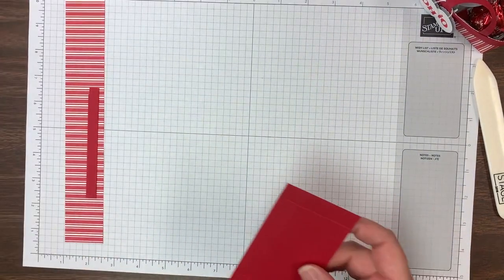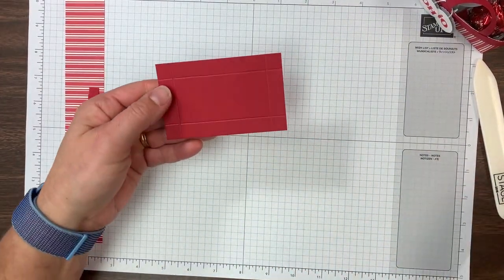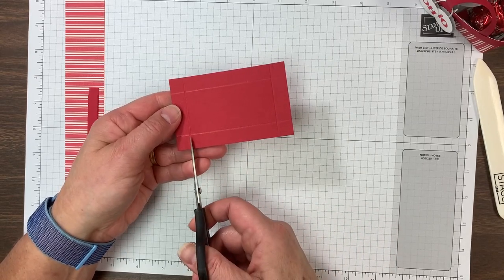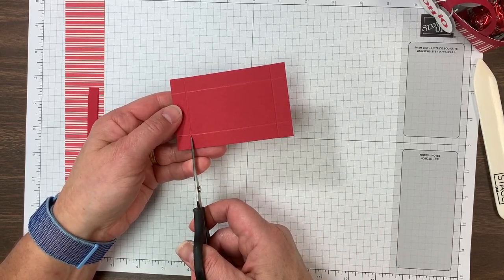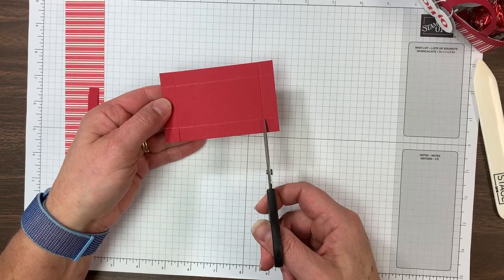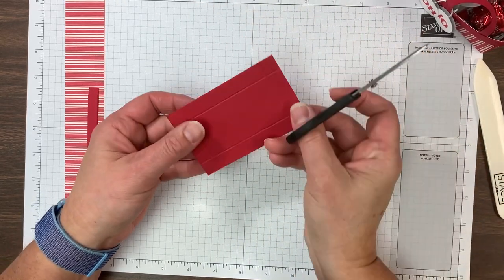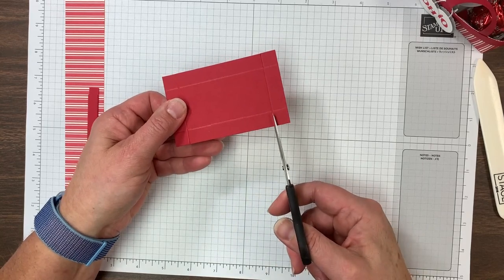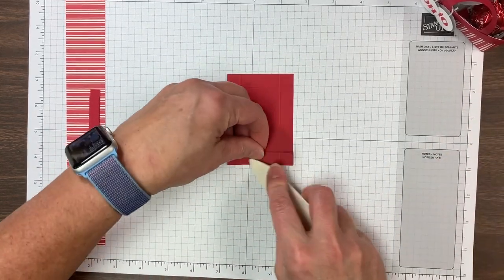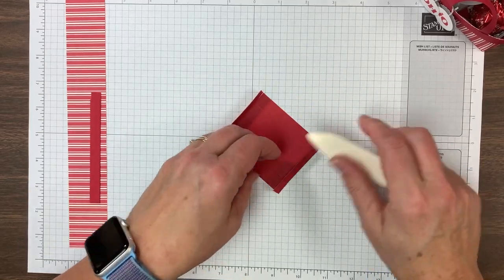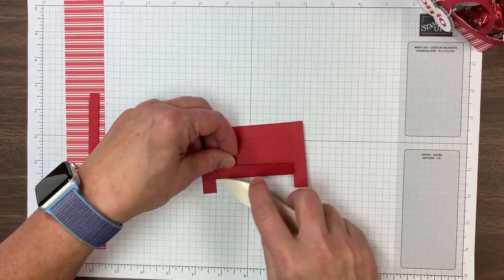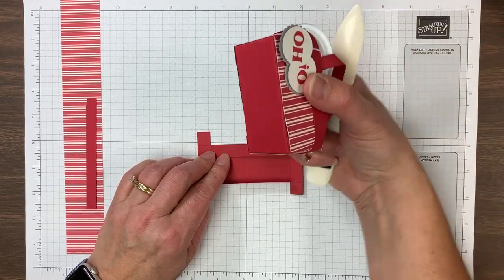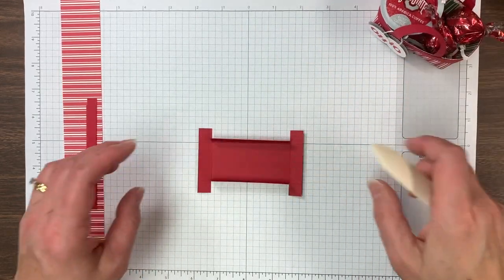Okay, then to make the base, I'm just going to take my snips and on each side, on the long side, I'm snipping in along the score line to the horizontal score line. Okay, I'm going to rotate it, do the other side as well. Okay, and then I'm going to burnish those score lines and we're creating this base. The base is like a little tray that holds everything together.